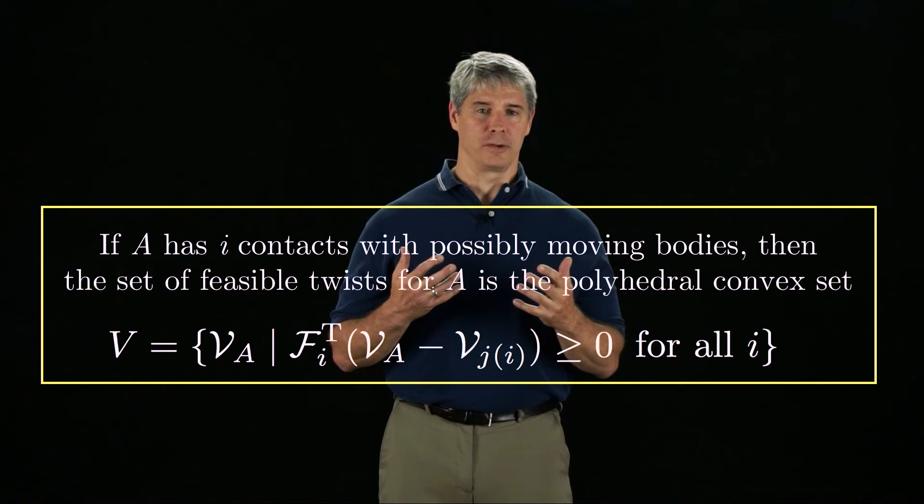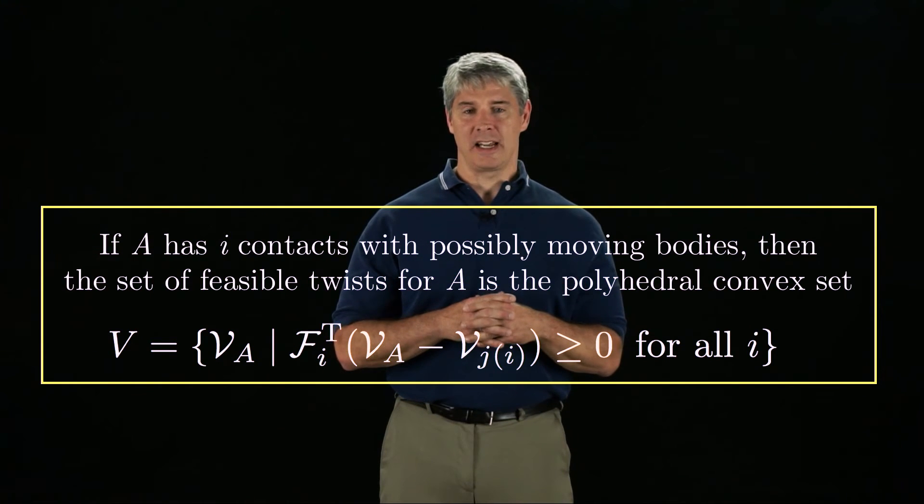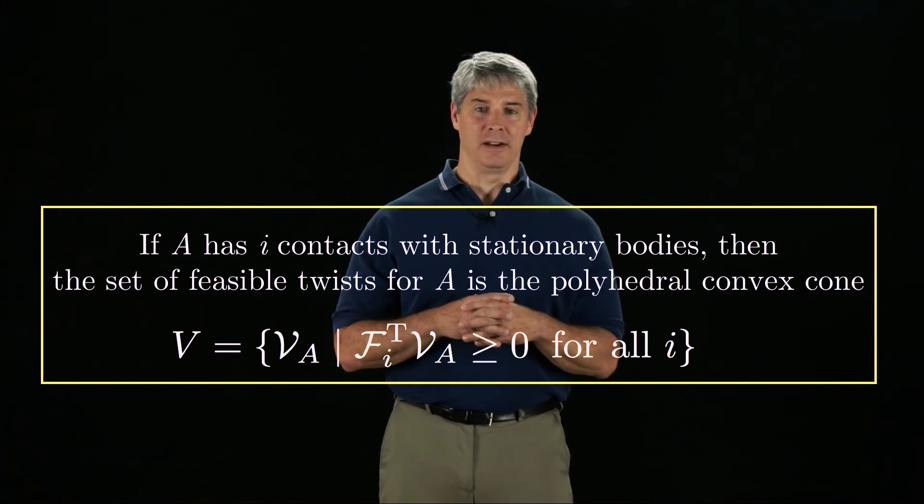If we assume that all external fixtures are stationary, then the set of feasible twists is a polyhedral convex cone.